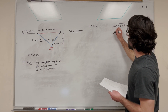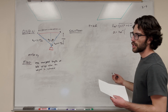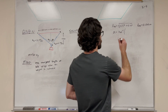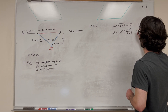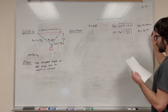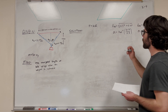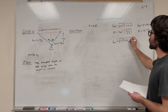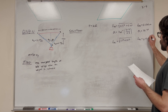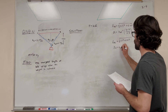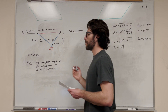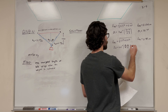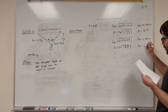To find theta one, we use inverse tangent. Tangent is opposite over adjacent, so that's 0.4 meters over 0.5 meters, giving us theta one equal to 38.7 degrees. We can do the same thing for length AC: 0.5² + 0.6², giving length AC equal to 0.781 meters. For theta two, inverse tangent of opposite over adjacent: 0.6 over 0.5, so theta two equals 50.2 degrees.